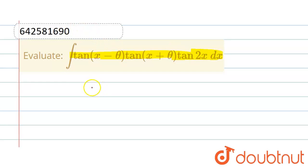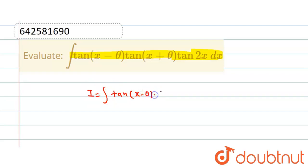Let us consider I is equal to the integration of tan(x − θ) into tan(x + θ) into tan(2x) dx.